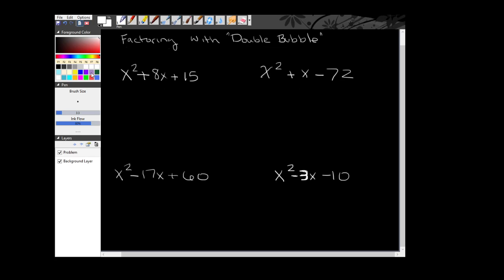Today I'm going to focus on a type of factoring that I call the double bubble, which is when the a value is equal to 1. What I mean by that is when I look at standard form of a quadratic, which is ax squared plus bx plus c, I'm talking about the number in front of x squared just being a 1.